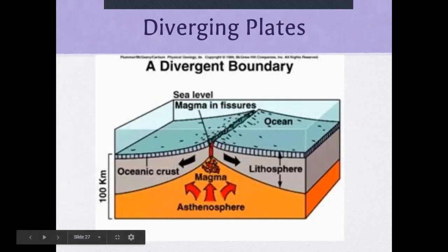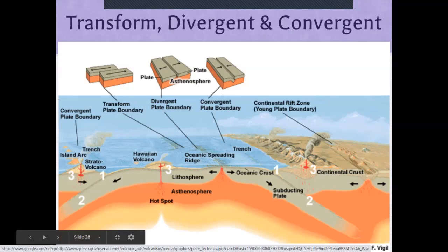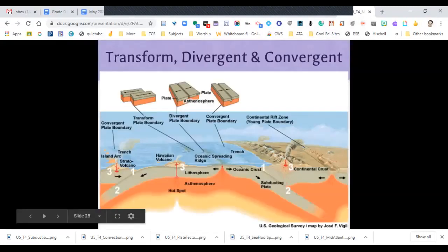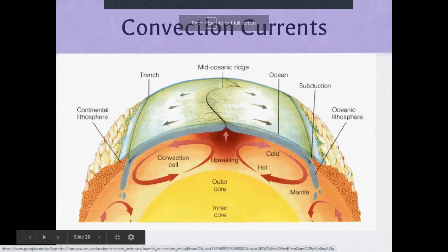Here are two diverging plates that are moving apart. Essentially, this would be the mid-Atlantic Ridge — because they're moving apart, the magma comes up and starts filling in the gap and hardening, which is where you get those layers that form. In the big picture of the whole Earth, we have a subduction zone here and here, and this would be the mid-Atlantic Ridge — possibly Africa or Europe on one side and North and South America on the other, where the two plates are going away from each other.